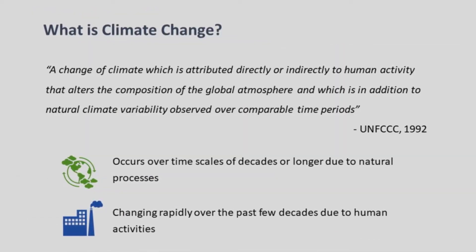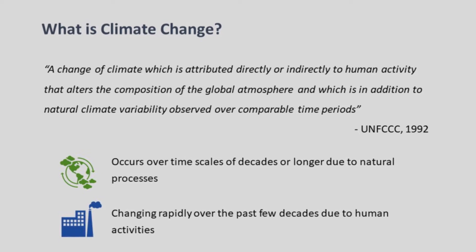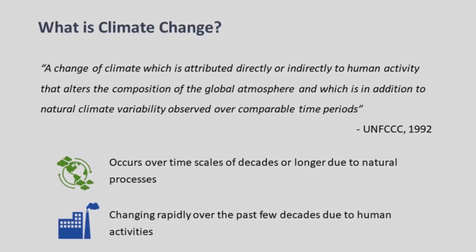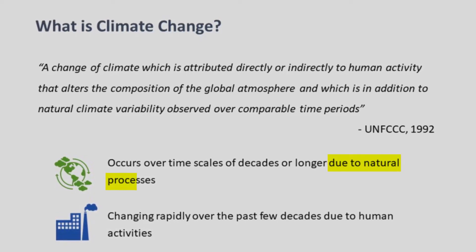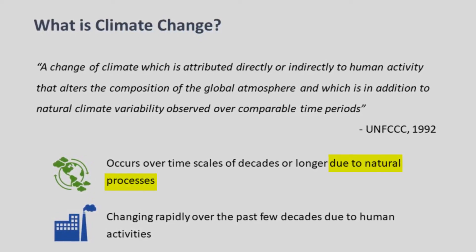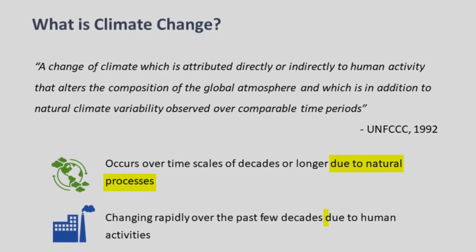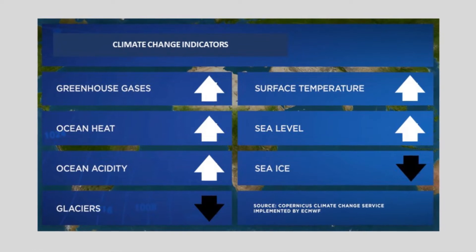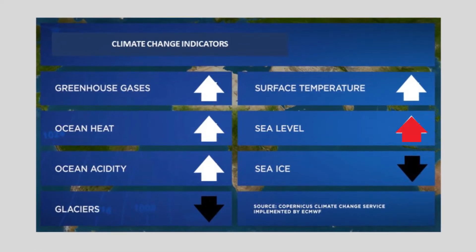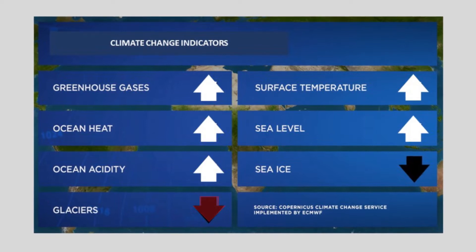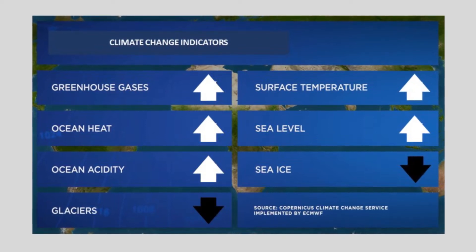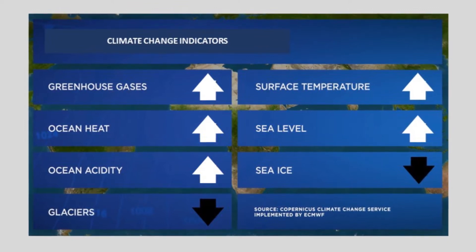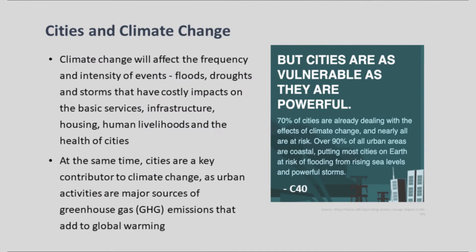Climate change describes a change in the averaged weather conditions in a region over a long period of time. Even though climate change occurs naturally over the course of time, in the past few decades it has been changing rapidly due to human activities. Evidences such as increase in sea levels, changes in surface temperatures, decrease in snow covers, and erratic rainfall patterns indicate towards this rapid climate change.